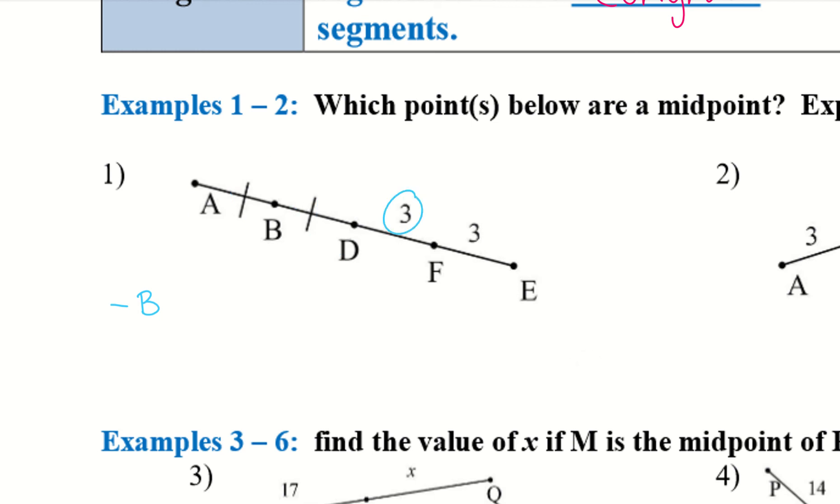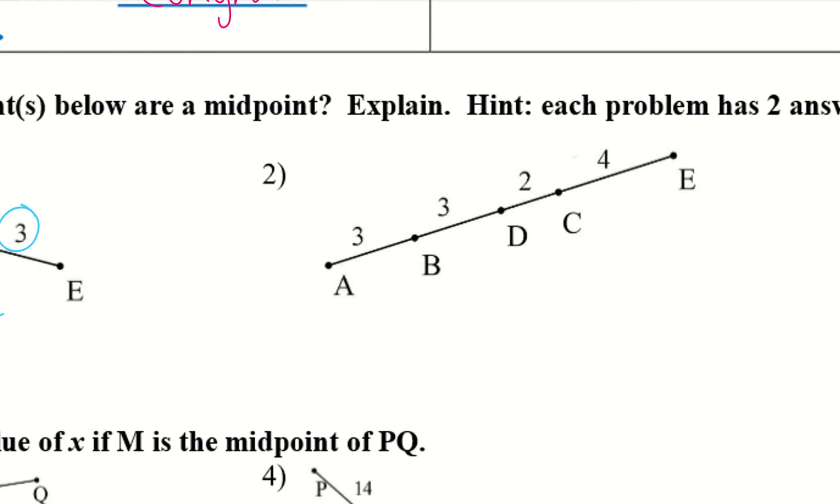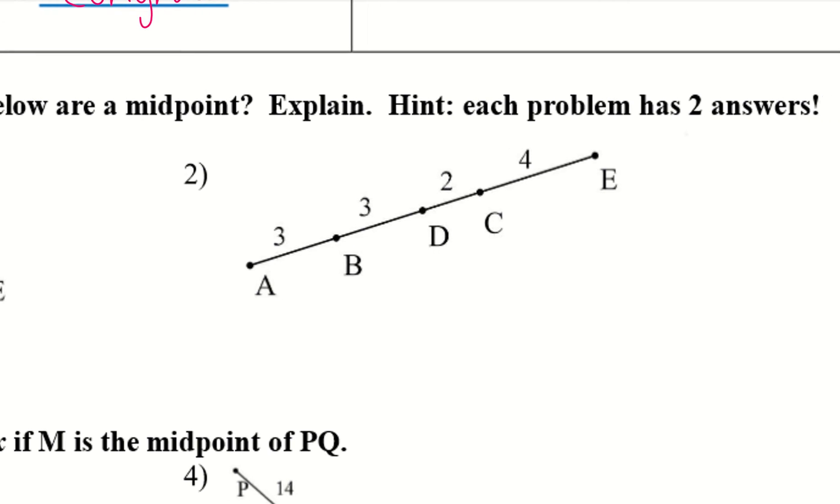And then over here we don't have lines but we do have numbers and they're both three. So that would mean F is my midpoint. So F divides DE perfectly in half. So that means DF is congruent to FE. So same thing over here I can draw that AB is congruent to BD. I could not draw the right letters today. So with that in mind, see if you guys can figure out number two. I'll give you guys a second and then I'll talk about it.